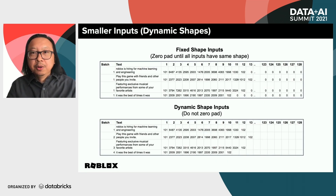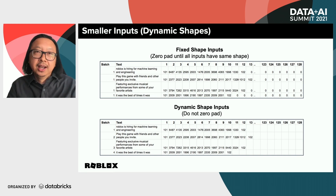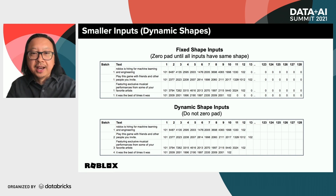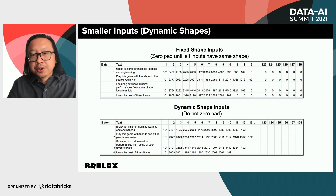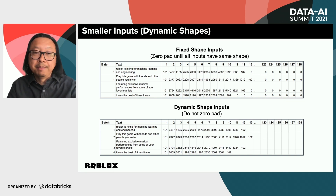Through the BERT tokenization process, a sentence is transformed into a numerical vector, and we have many examples of that shown here. In our earlier attempts at optimizing, we were trying to batch our inputs as fixed-shape inputs. Because we were batching, we had to zero-pad our input vectors of different lengths so they would have the same length and could be passed together as a batch into the DistilBERT model.